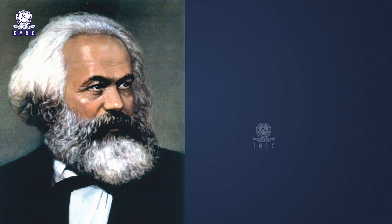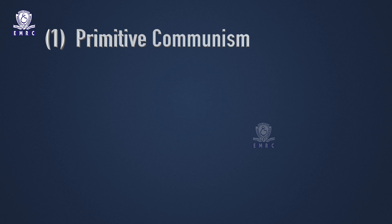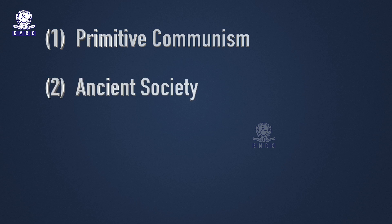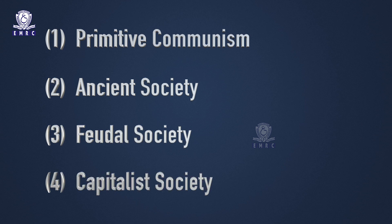From a Marxist perspective, systems of stratification derive from the relationships of social groups to the means of production. Marxists use the term 'class' to refer to the main strata in all stratification systems. From a Marxist viewpoint, a class is a social group whose members share the same relationship to the means of production. Marx believed that western society had developed through four main stages: primitive communism, ancient society, feudal society, and capitalistic society.